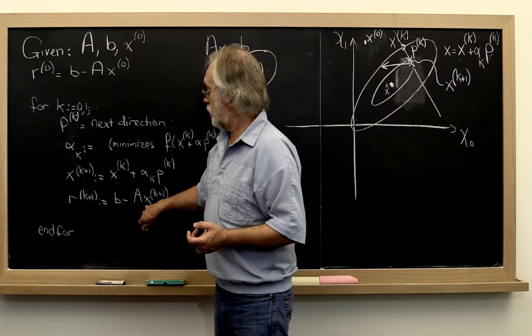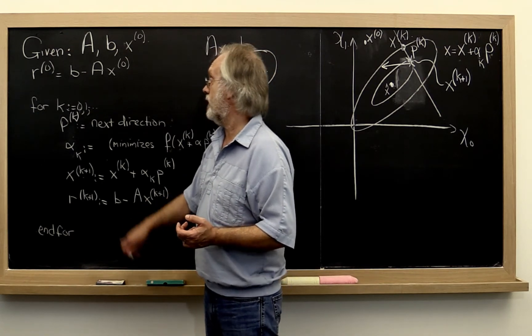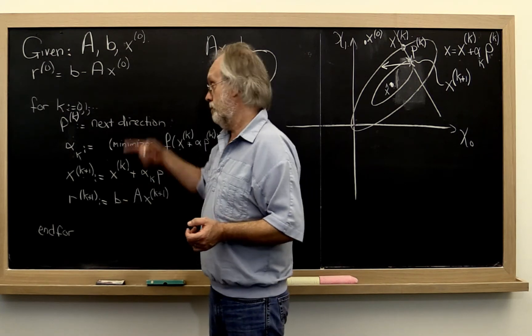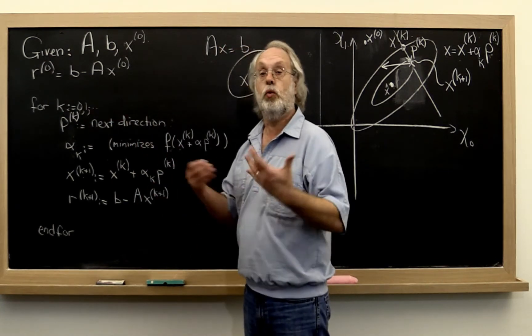Then our next approximation to the solution is just our current approximation plus alpha_k times the search direction. And then we also compute the residual. And at that point we're ready to go back to the top. And we just keep doing this.